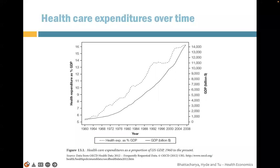Here is a graph we've seen in Chapter 1 showing healthcare expenditure as a percentage of GDP. It has increased from 5% in 1960 all the way to 16% in 2008. The solid line represents GDP in billions of dollars. Healthcare expenditure as a proportion of US GDP has been continuously growing.